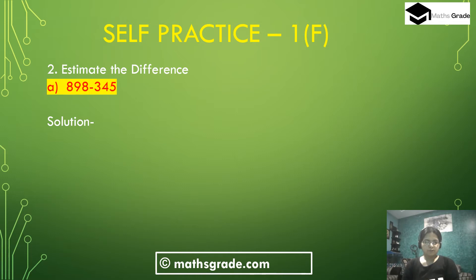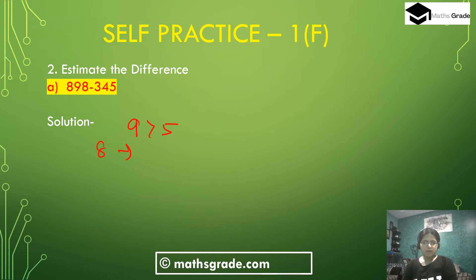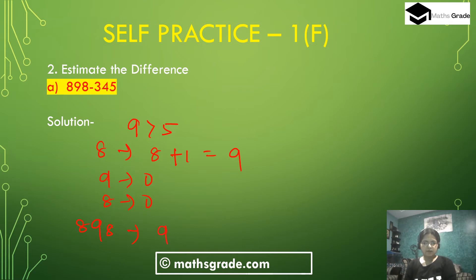Question number 2: estimate the difference. First we take 898 minus 345. Here we have to estimate the difference, so first round off these numbers to the nearest hundred. 898 is a three-digit number. The tens place digit is 9, which is more than 5, so add 1 to the hundreds place digit. 8 changes to 9, the tens digit 9 changes to 0, and the units digit 8 changes to 0. So 898 rounded to the nearest hundred is 900.